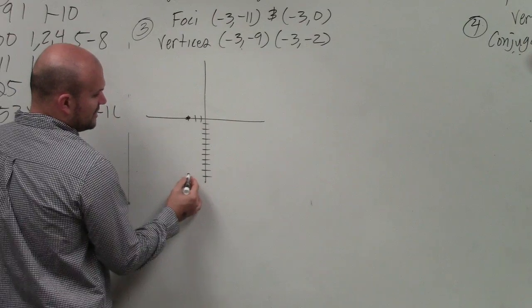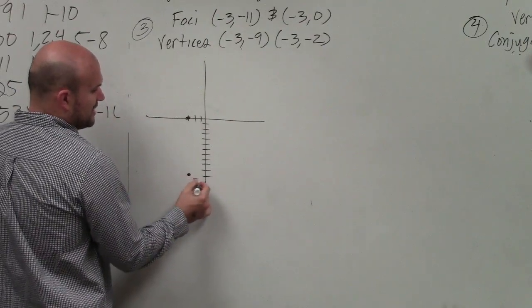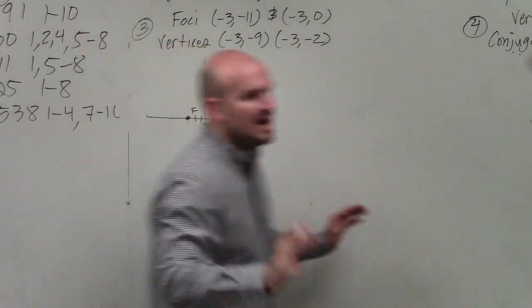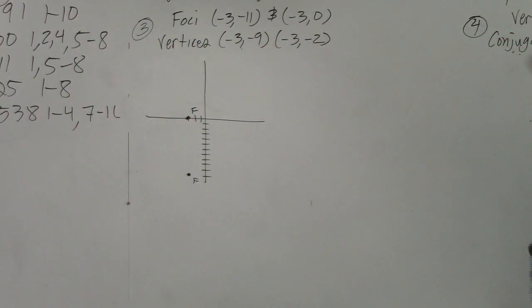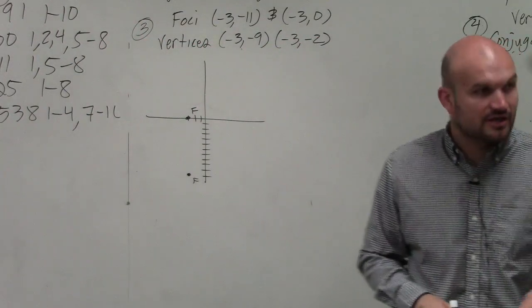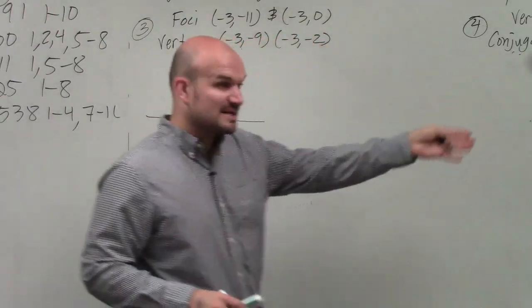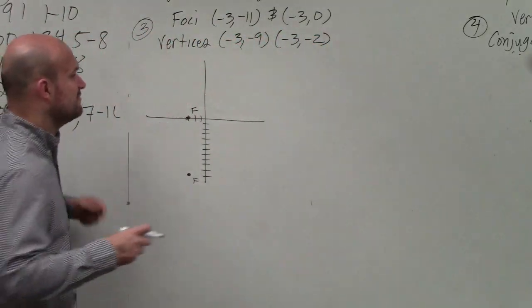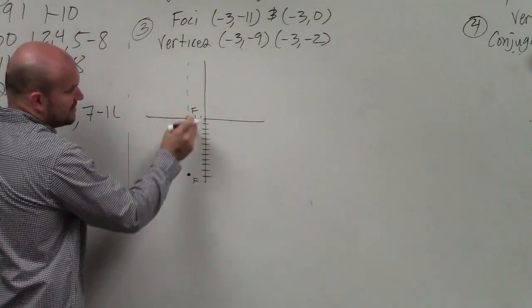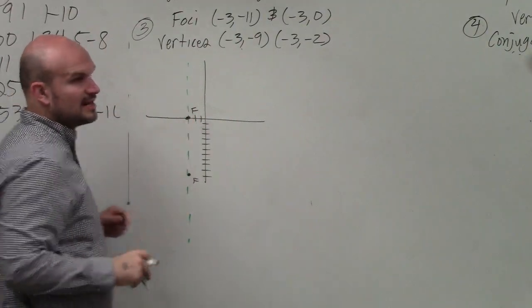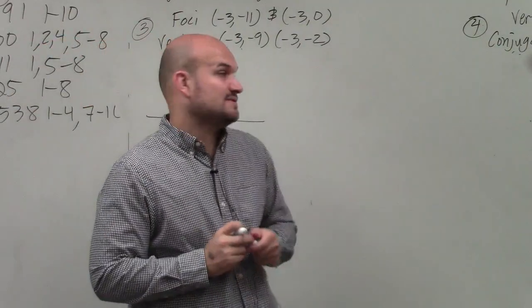Then, to avoid confusion, make sure you guys label them. Those are your two foci. Automatically, just from there, I know what my transverse axis is. Remember that the transverse axis is where the foci, my vertices, and my center lie. So I can automatically draw a nice line that represents my transverse axis.